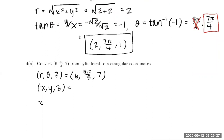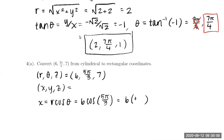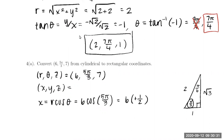So let's find those values. x is r cosine theta, which is 6 cosine of 5π/3. Now 5π/3 lies in the fourth quadrant, so the cosine value is going to be positive. I always like to draw my special triangle so I don't have to memorize them — this is π/6 up top, π/3 down here, with sides 1, 2, square root of 3. My reference angle is π/3, and cosine is adjacent over hypotenuse, giving one half. So x equals 3.